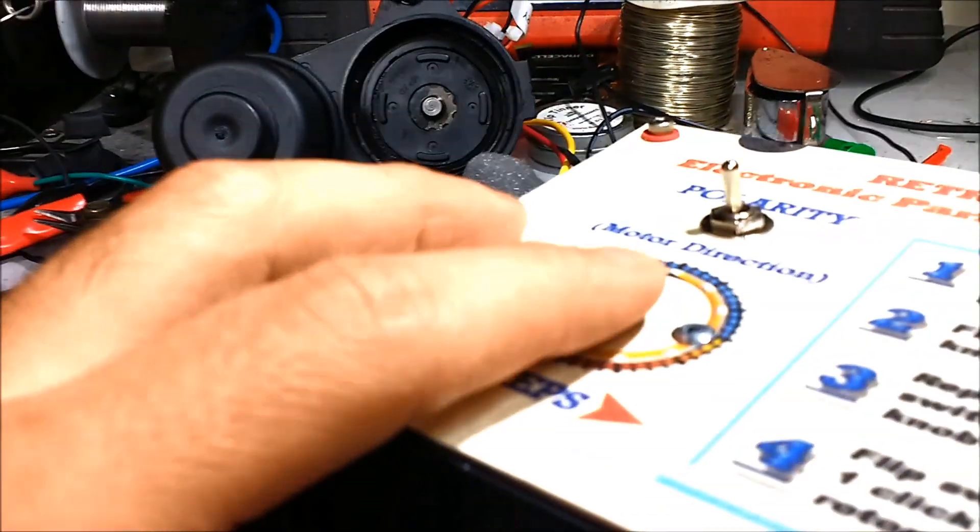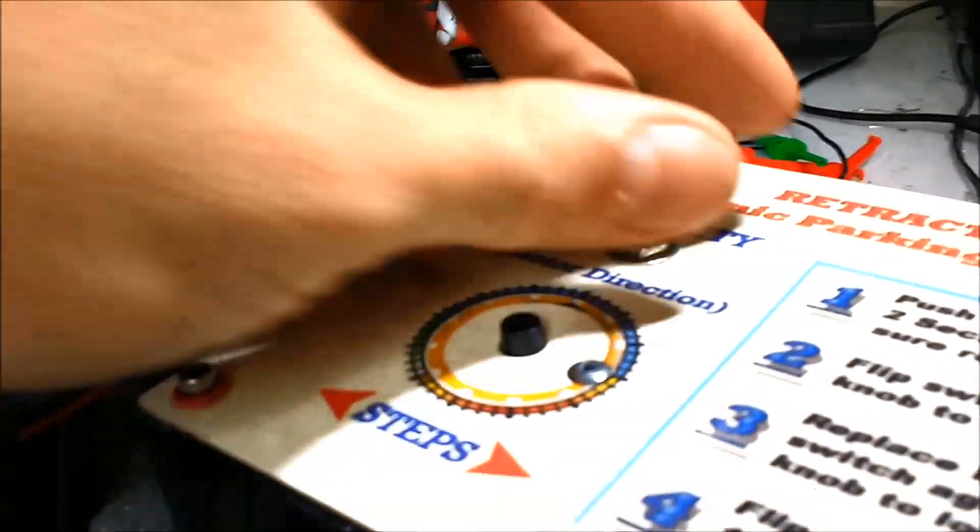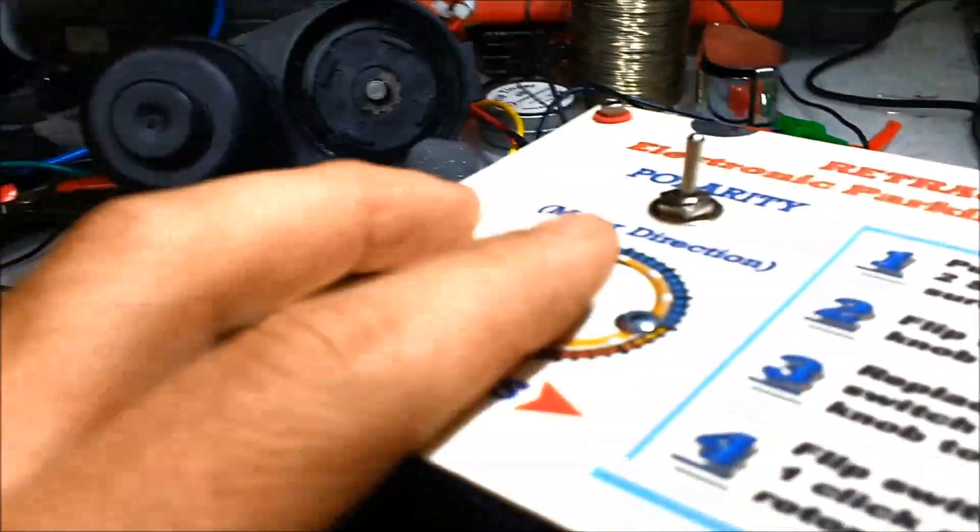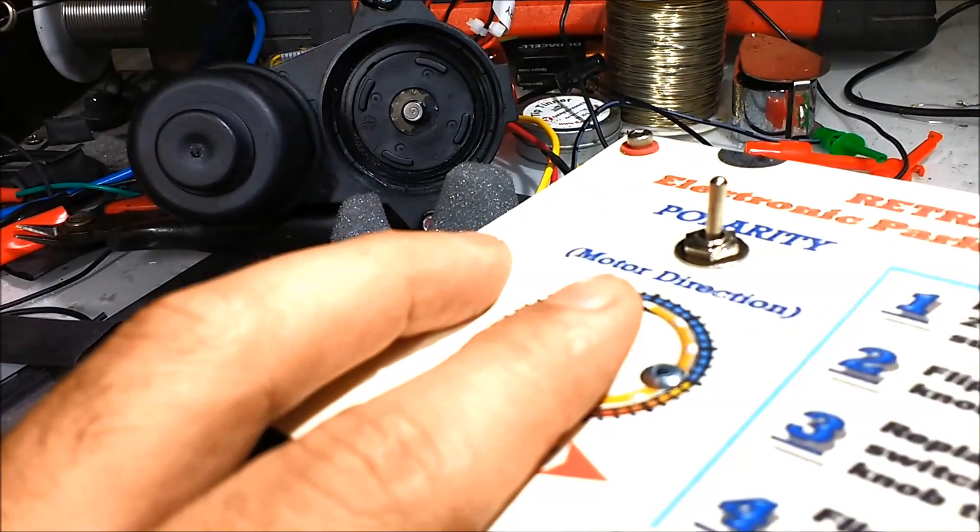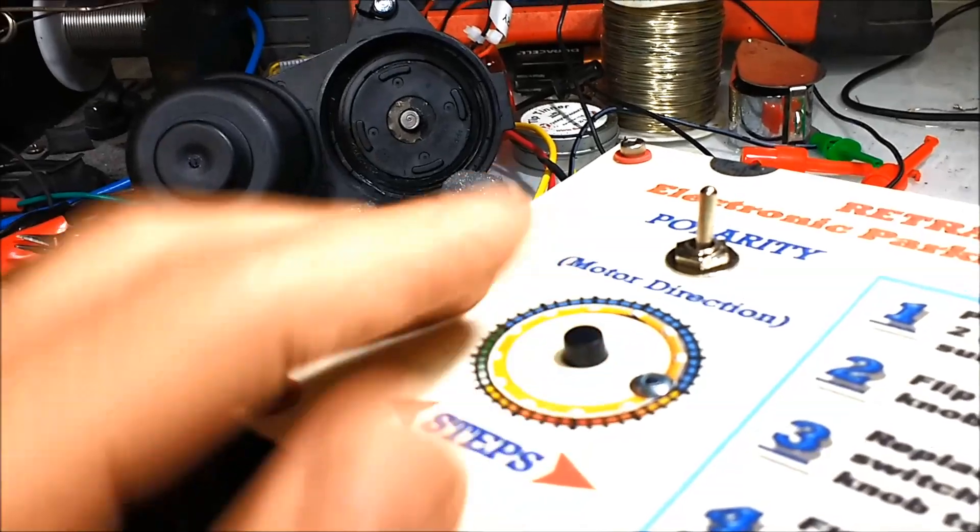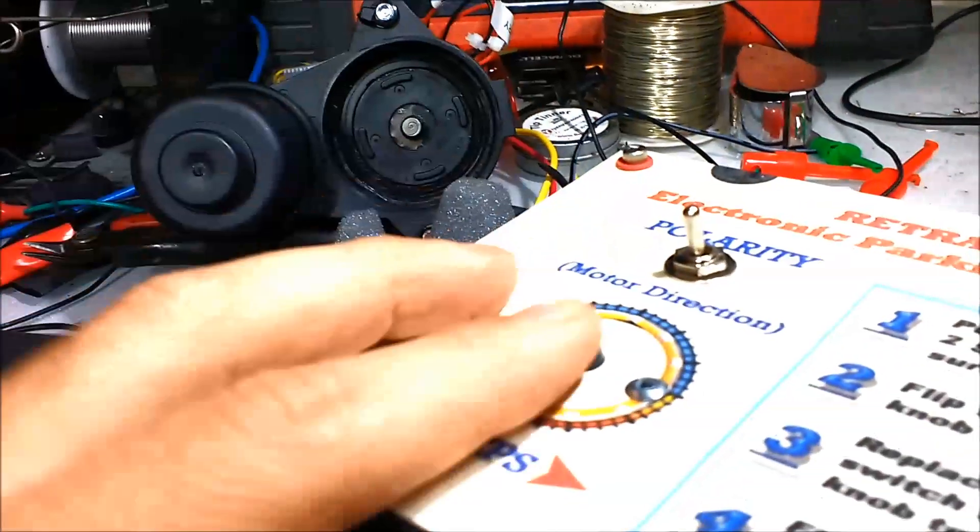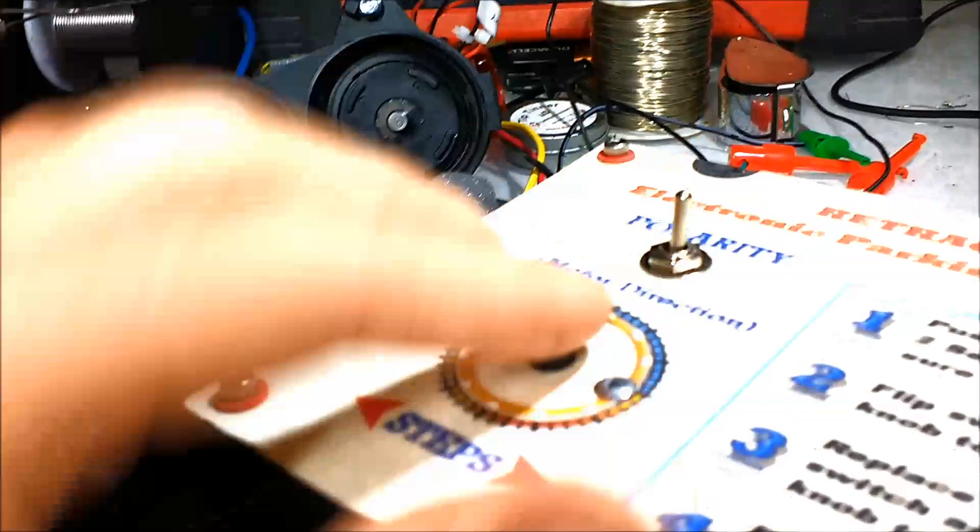Oftentimes you do a brake job and the motor has issues and then if you don't actuate the motor back and forth, you could have problems. You're going to have to redo the job and that's going to cost you money. Anytime you get a comeback, that'll cost you money.